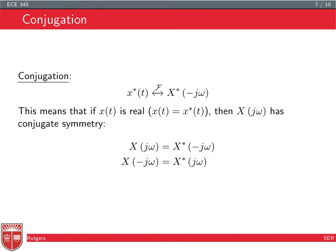If the signal is real, meaning x(t) equals x*(t), then X(j*omega) has conjugate symmetry: X(j*omega) = X*(-j*omega) and X(-j*omega) = X*(j*omega). This follows from the conjugation property because the CTFT of x(t) is X(j*omega), the CTFT of x*(t) is X*(-j*omega), and since the signal is real these two are equal.